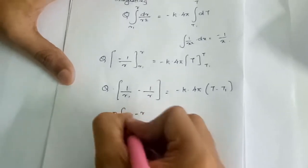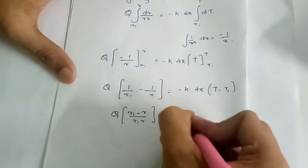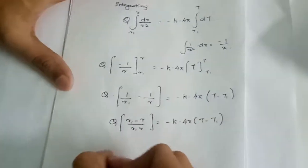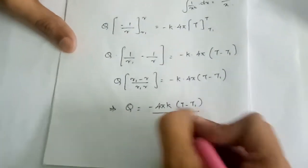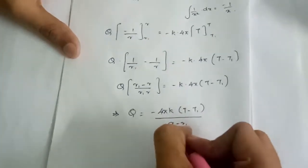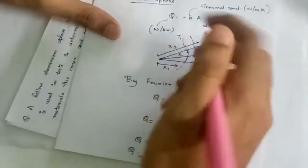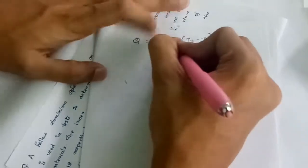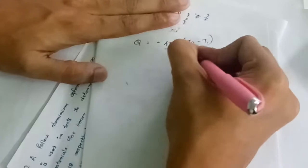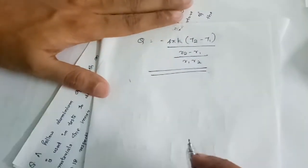Rearranging: Q · (R1 - r)/(R1·r) = -k · 4π · (T - T1), which gives Q = -4πk(T - T1) / [(r - R1)/(R1·r)]. Taking the full section from R1 to R2, the general equation for conduction through a hollow sphere becomes: Q = -4πk(T2 - T1) / [(R2 - R1)/(R1·R2)].